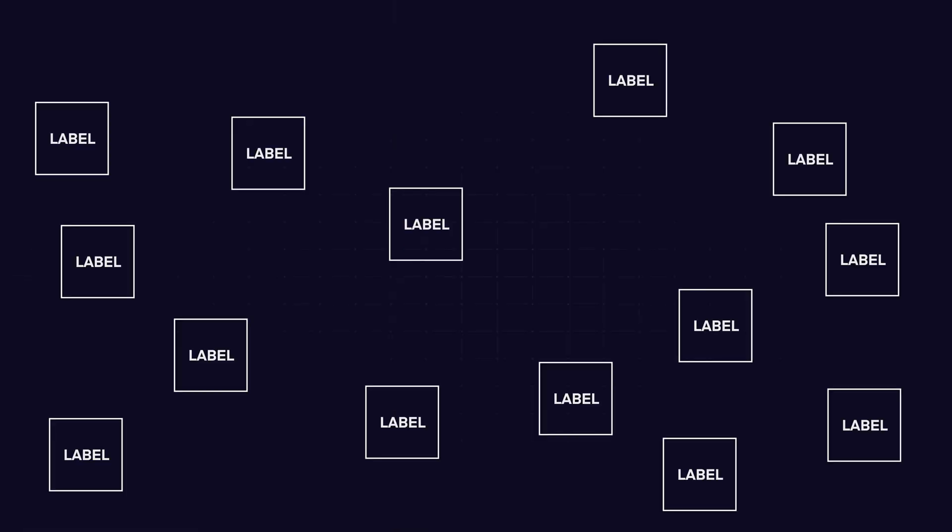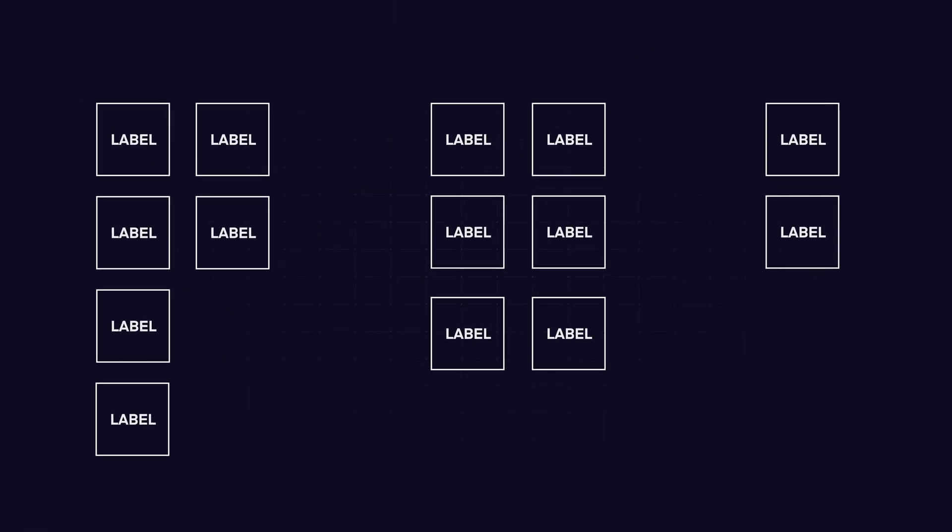Now let's talk about the different types of card sorting. There is open card sorting, closed card sorting, and a hybrid of the two. With open card sorting, you hand a bunch of cards to the participant and ask them to categorize them based on what makes the most sense to them. After they've categorized all the cards, you ask them to name each group.